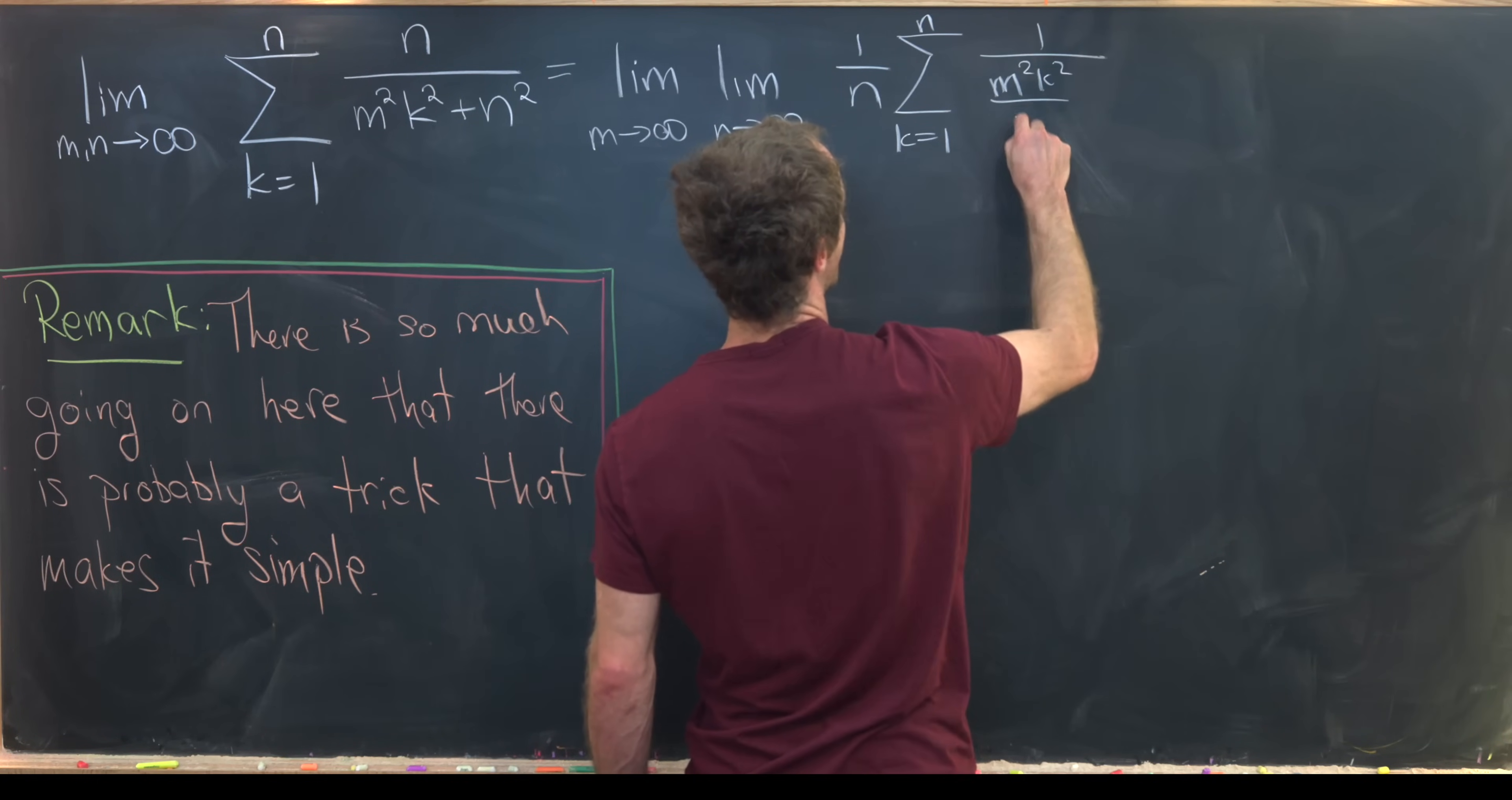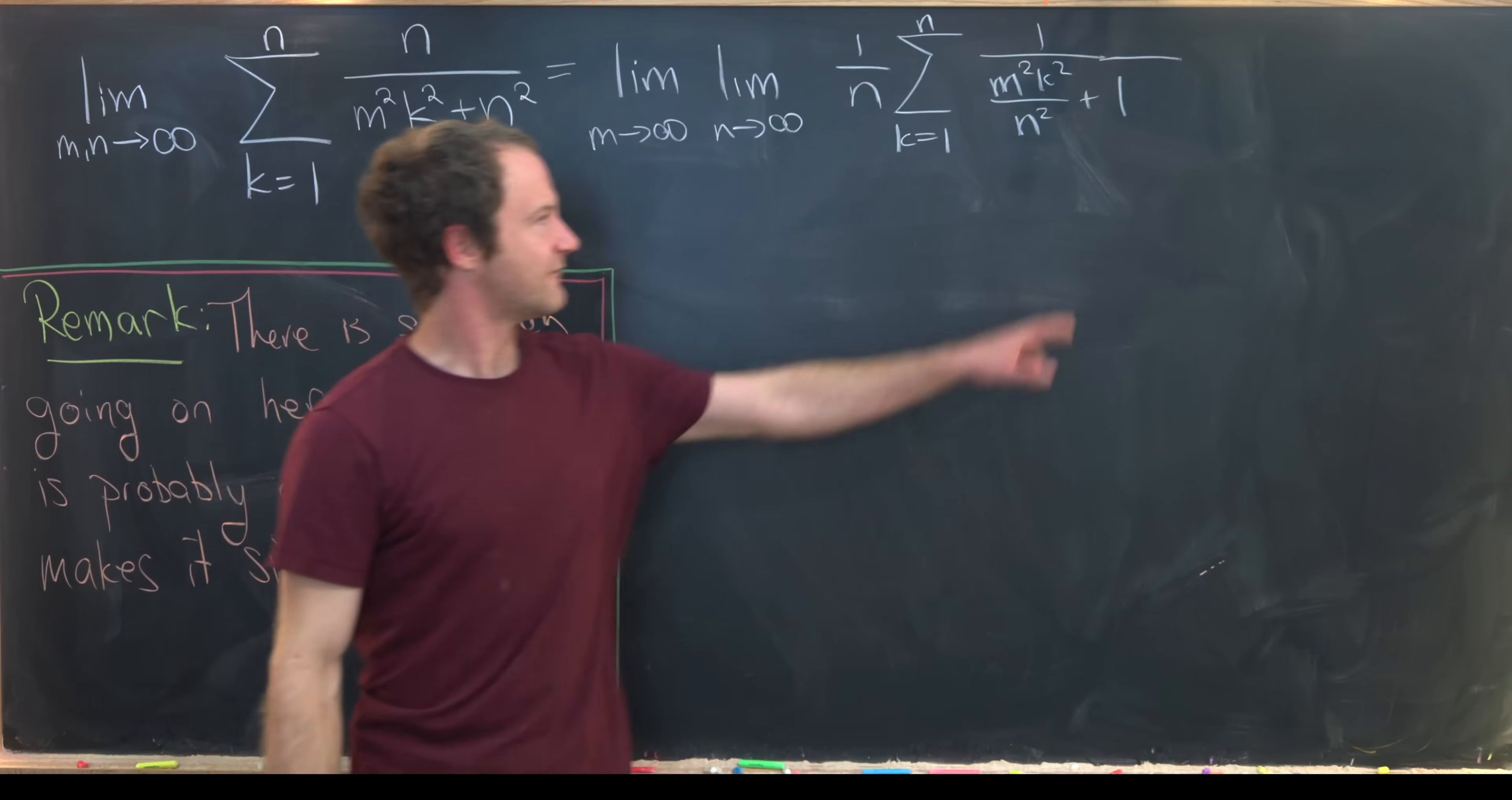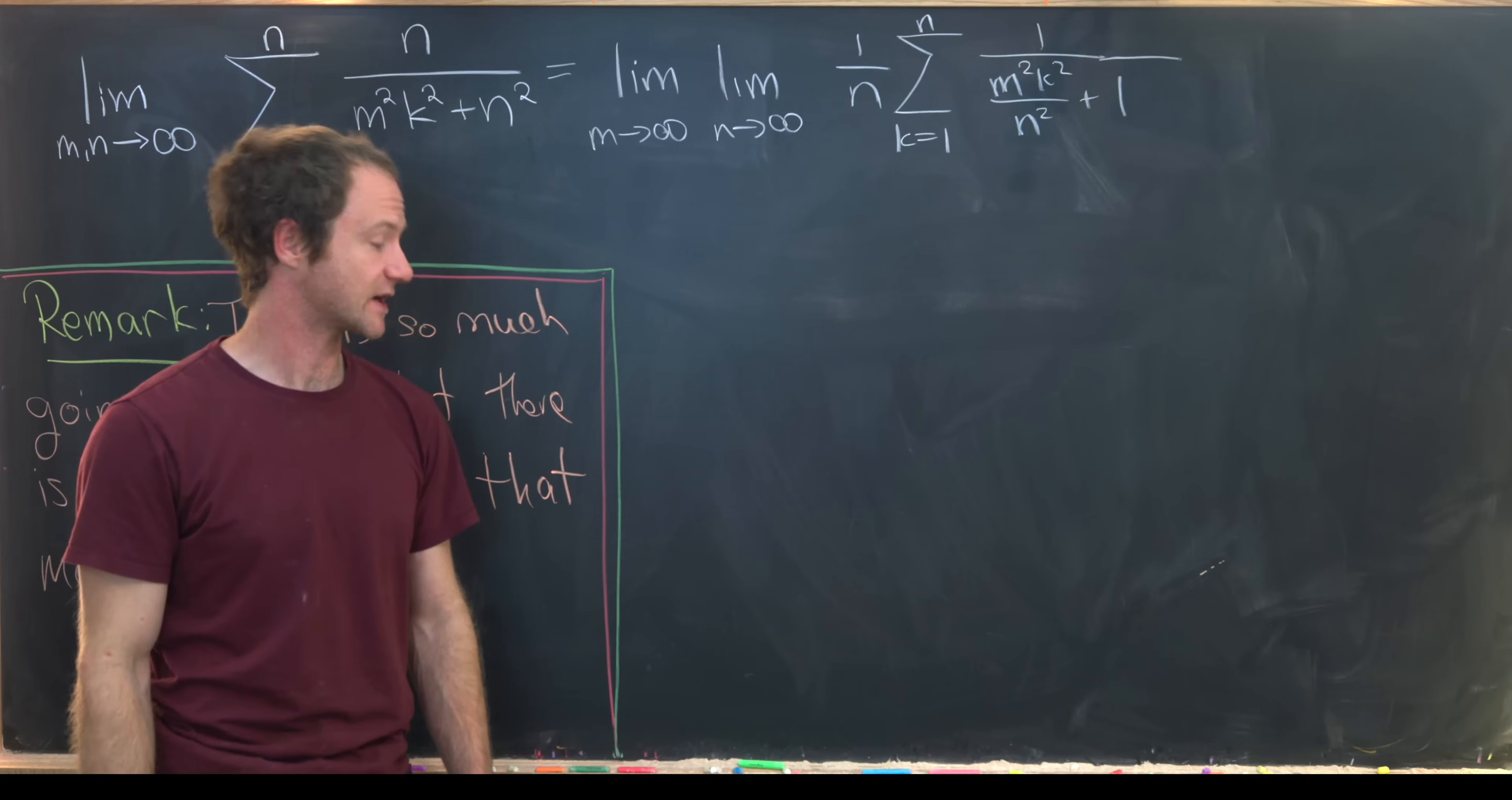You might look at this and say, what happened to this n in the numerator? I factored an n squared out of the denominator, but when I factored that n squared out of the denominator, it canceled with an n in the numerator to give me this 1 over n type object.